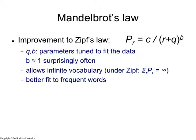The Q and B are free parameters — those are parameters that are usually fit to the particular data that you have. The really surprising thing is that most of the time, the exponent ends up being somewhere around 1, which is somewhat strange, because when it's 1 you basically have Zipf's Law again.